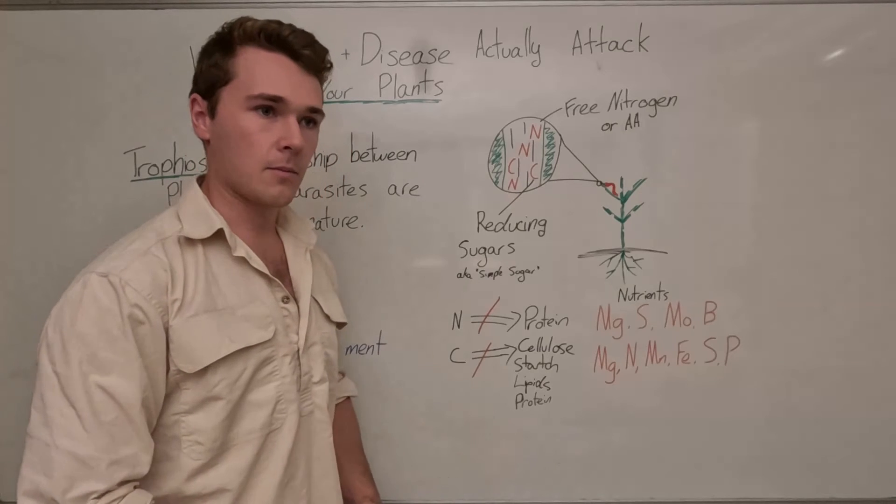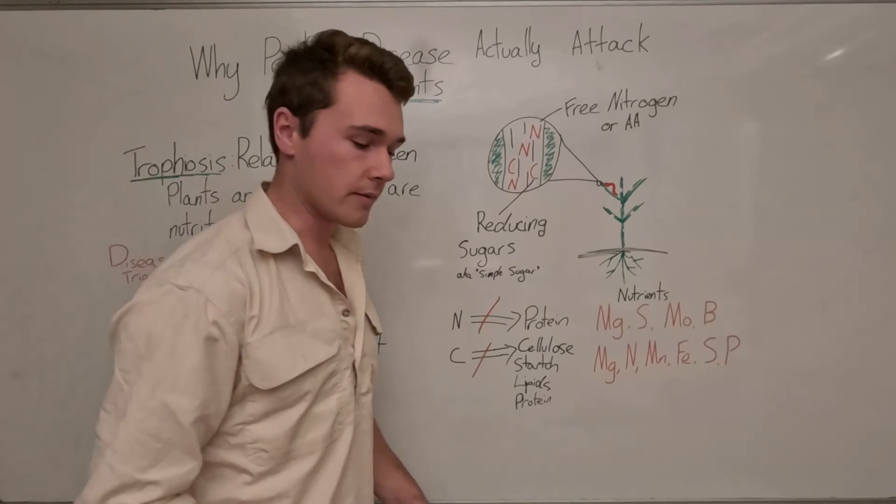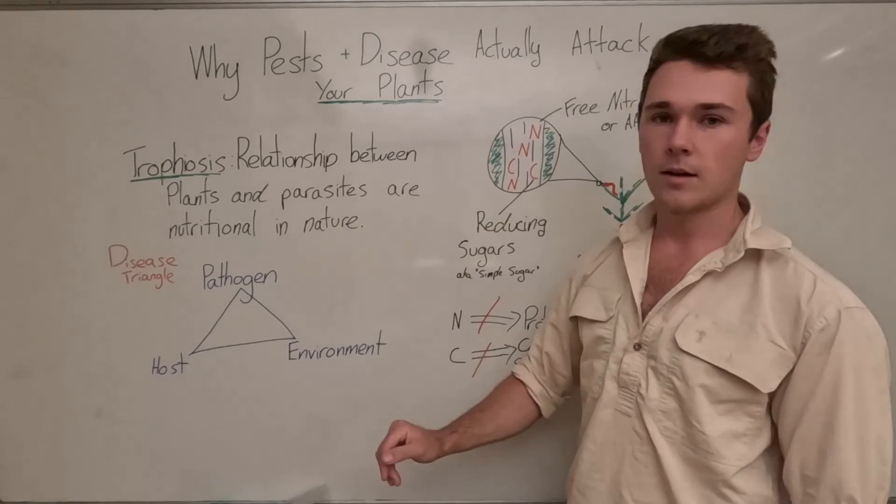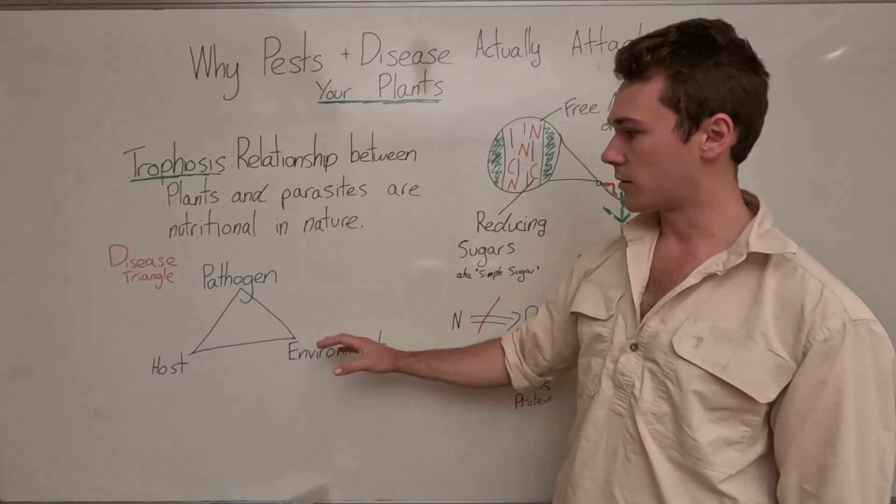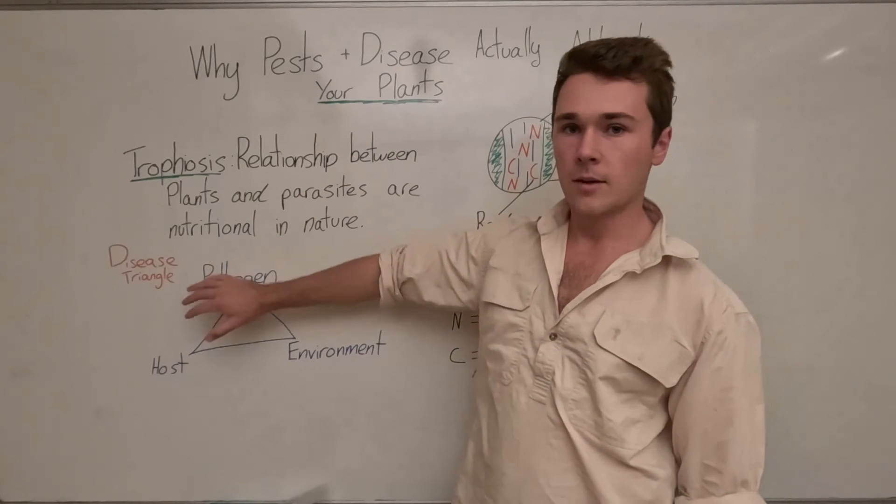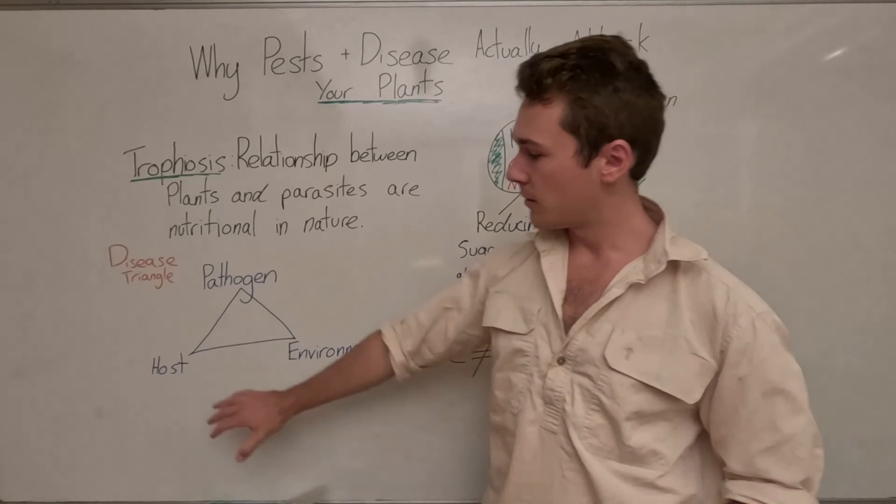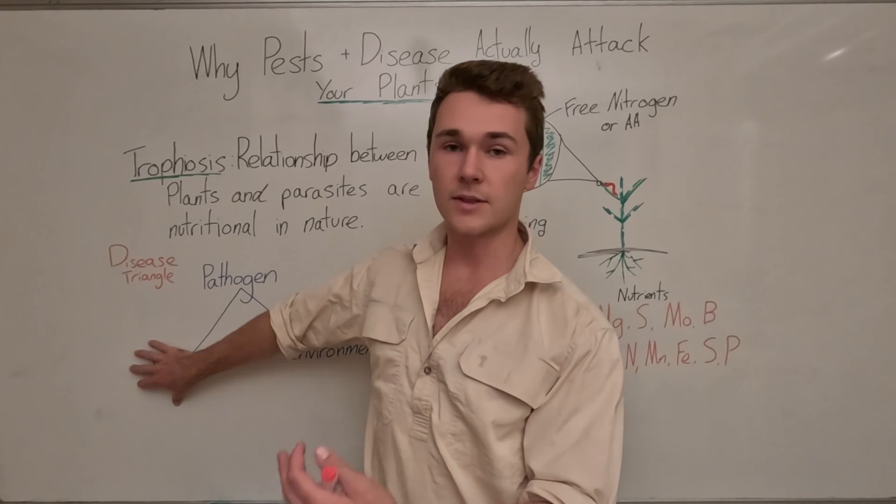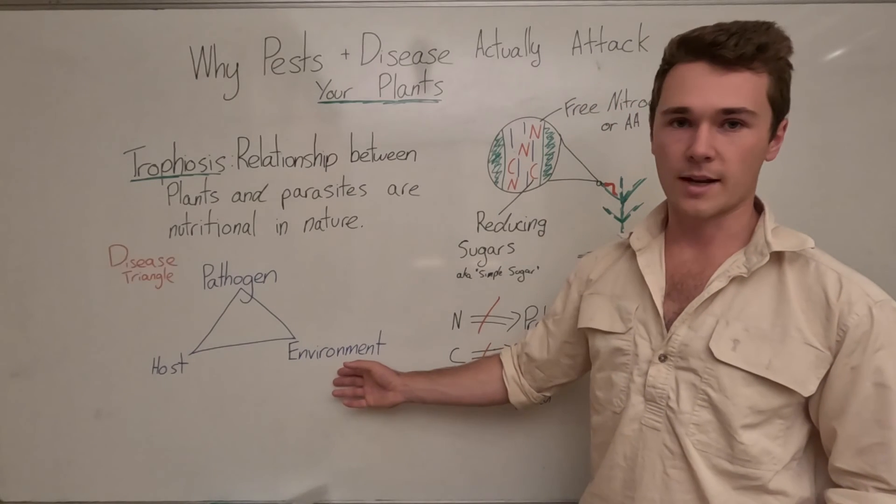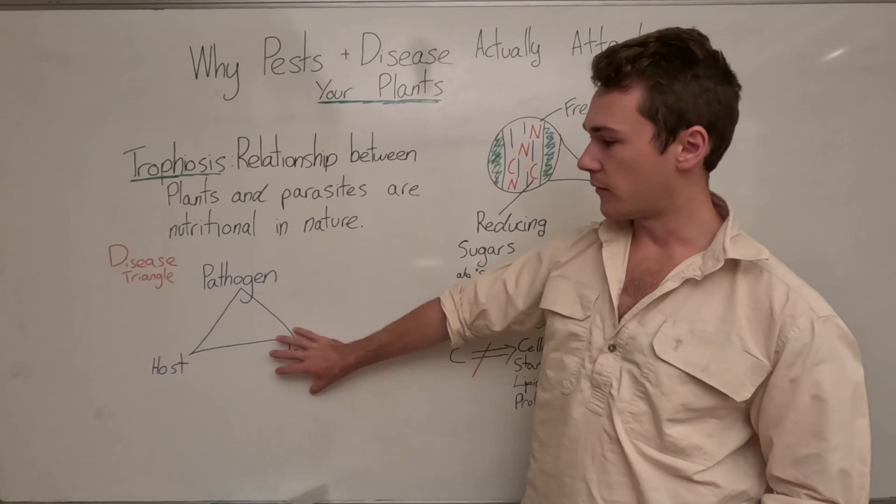Now, the thing that pesticides specifically solve, and don't get me wrong, they are important, is getting rid of the pathogen. So when we look at this disease triangle, we have pesticides getting rid of our pathogen. We have what we discussed here, nutrition, which gets rid of a susceptible host because it's not susceptible anymore. And then we can also have cultural management changes that actually gets rid of the environment.